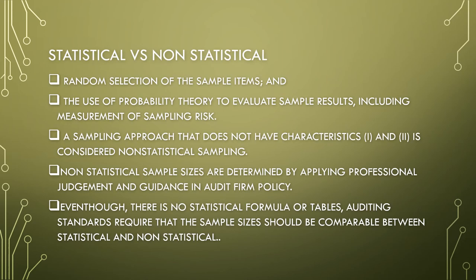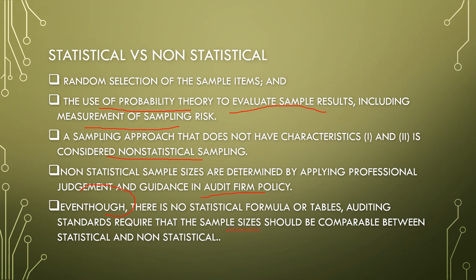Statistical sampling involves random selection of sample items and the use of probability theory to evaluate sample results, including measurement of sampling risk. A sampling approach that does not have the characteristics of random selection and the use of probability theory is considered non-statistical sampling. Non-statistical sample sizes are determined by applying professional judgment and audit firm policy. Even without statistical formulas or tables, auditing standards require that sample sizes should be comparable between statistical and non-statistical approaches.